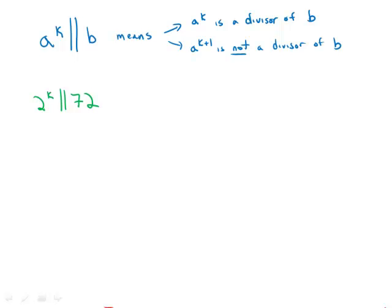So we'll unpack this a little bit. What we're saying is that a to the k goes into b, but a to the k plus 1 does not. In other words, a to the k is the highest power of a that divides into b.